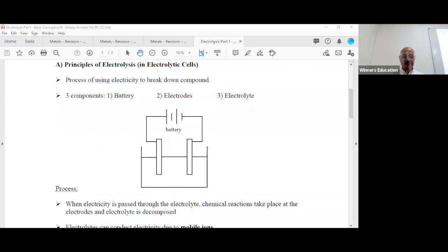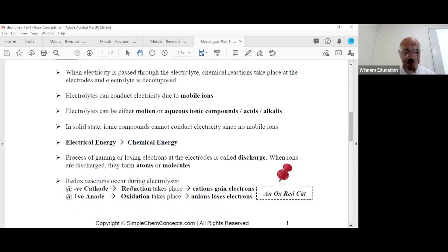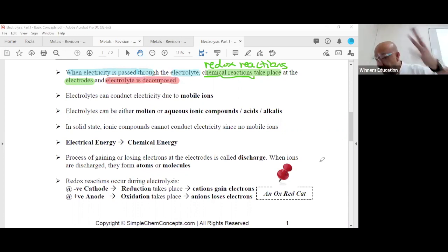So when the battery is switched on and electricity is passed through the wires, it passes through the electrolyte and chemical reactions will take place at what we call the electrodes. What chemical reactions? Redox reactions. All of them are redox. If you're not good at redox, you will never be able to do this well. What happens along the way? The electrolyte breaks up and decomposes.